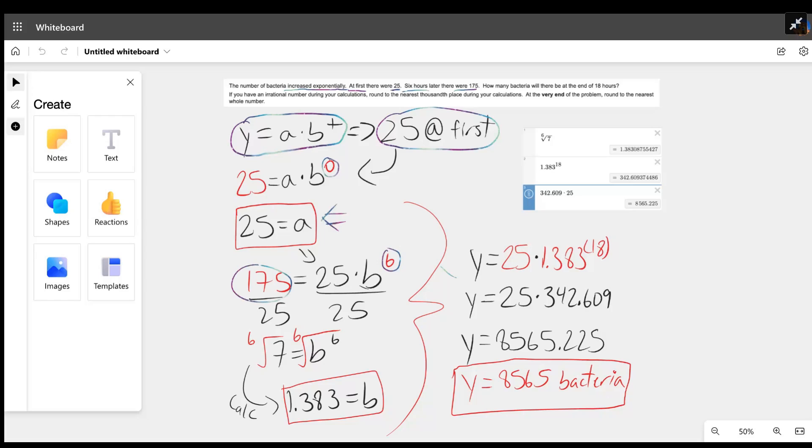We divide 25 from both sides, which gives us seven equals b to the power of six. We have to take the power of six out of both sides, so doing that gives us 1.383 equals b. I did the calculations on this side of the page right here. It's important to note there are three values after the decimal because the problem says round to the nearest thousandth place.